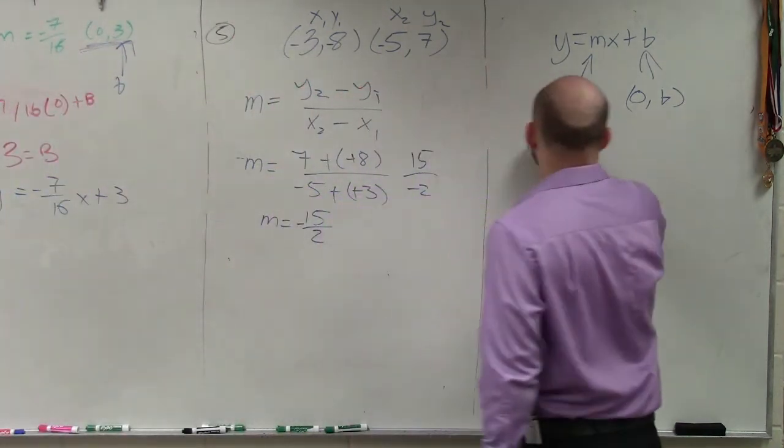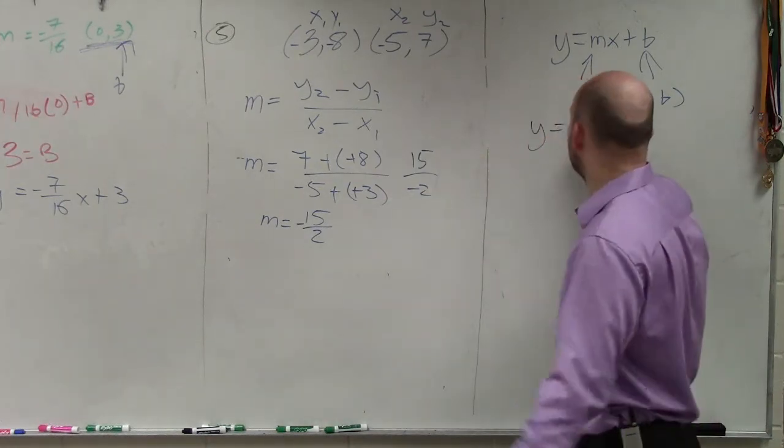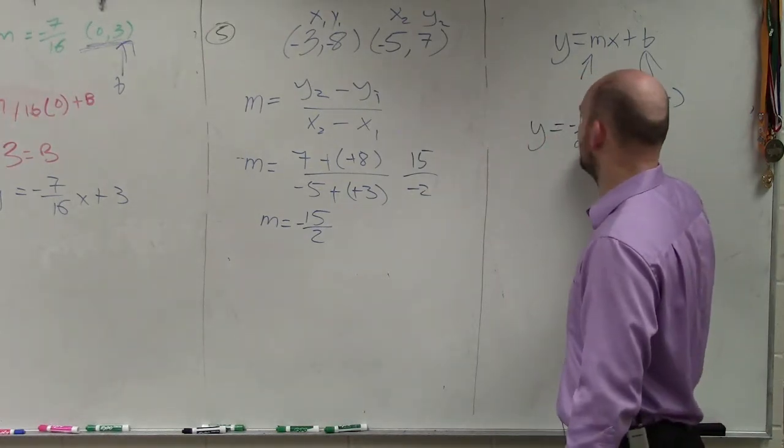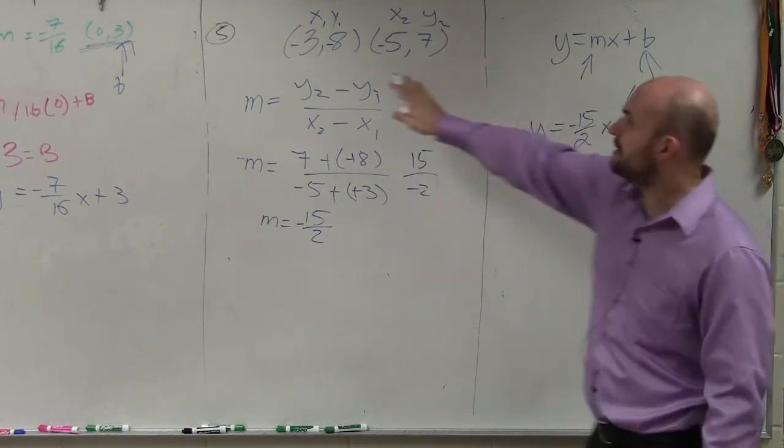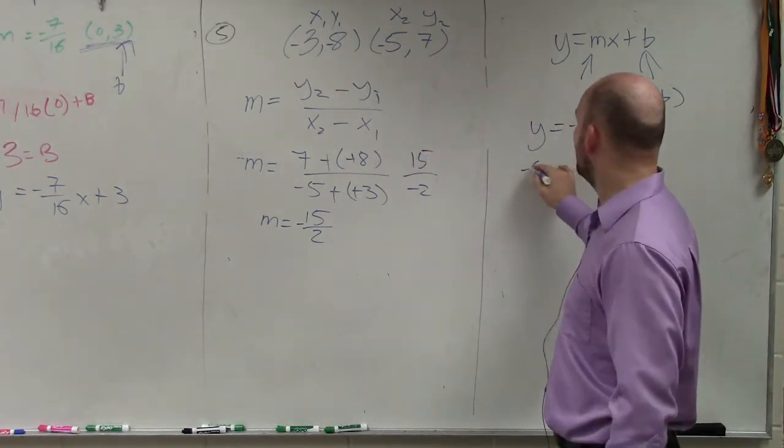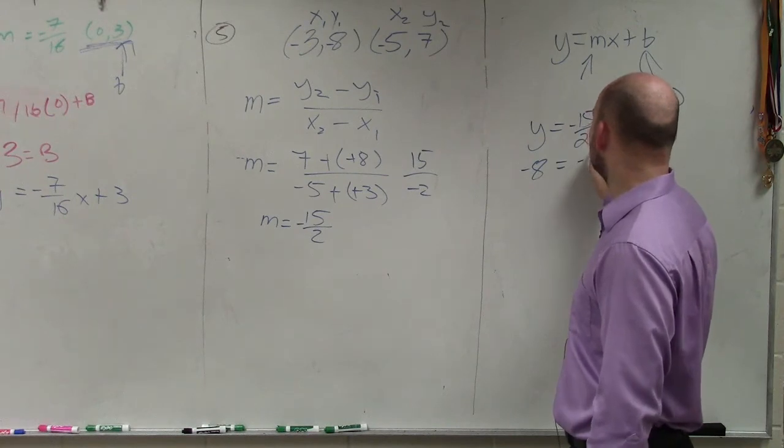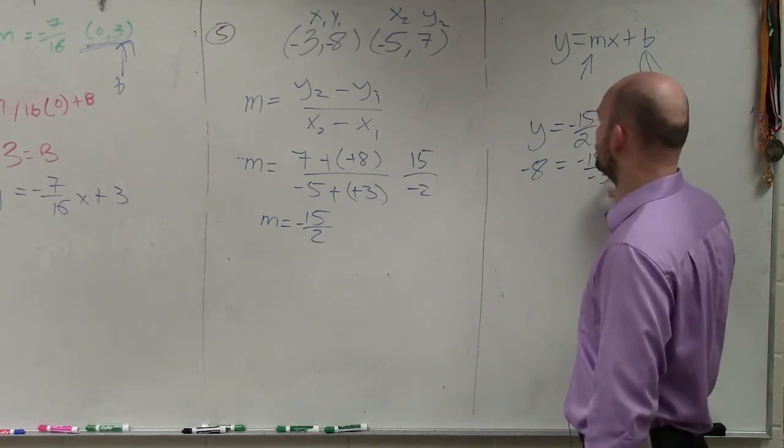So therefore, I have y equals, I now know my m, my slope, which is negative 15 halves x plus b. I still don't know the y-intercept, but I have a point that I can plug in. And again, ladies and gentlemen, it does not matter which point you choose.